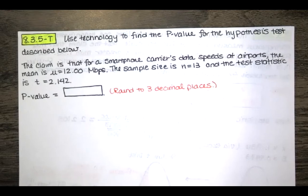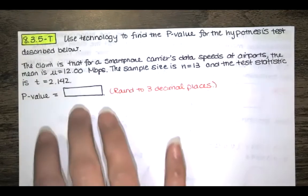We're told that the claim is that for a smartphone carrier's data speeds at airports the mean is equal to 12.00 megabits per second.